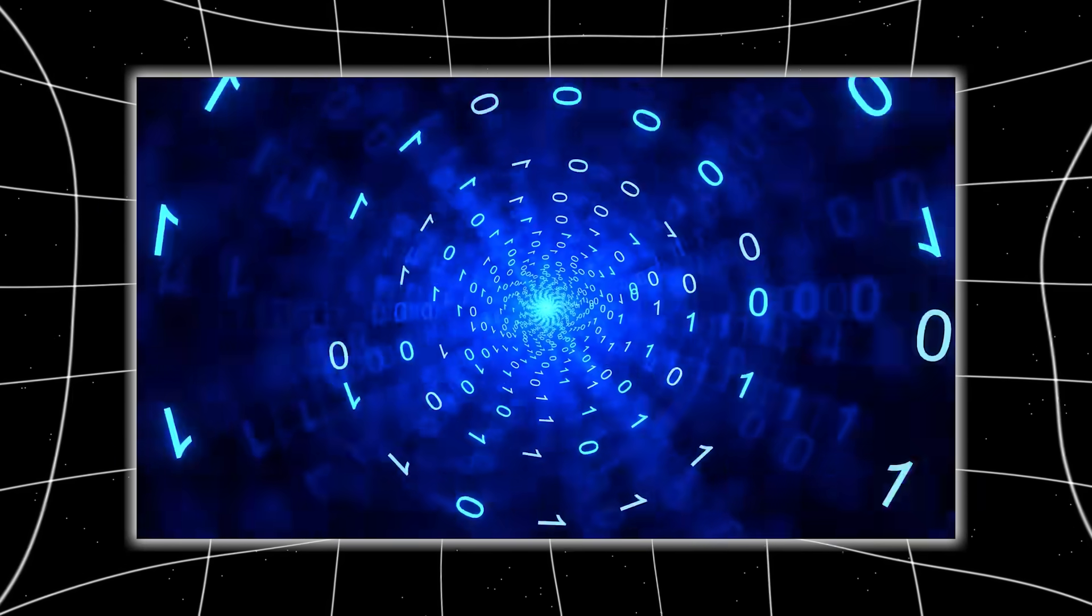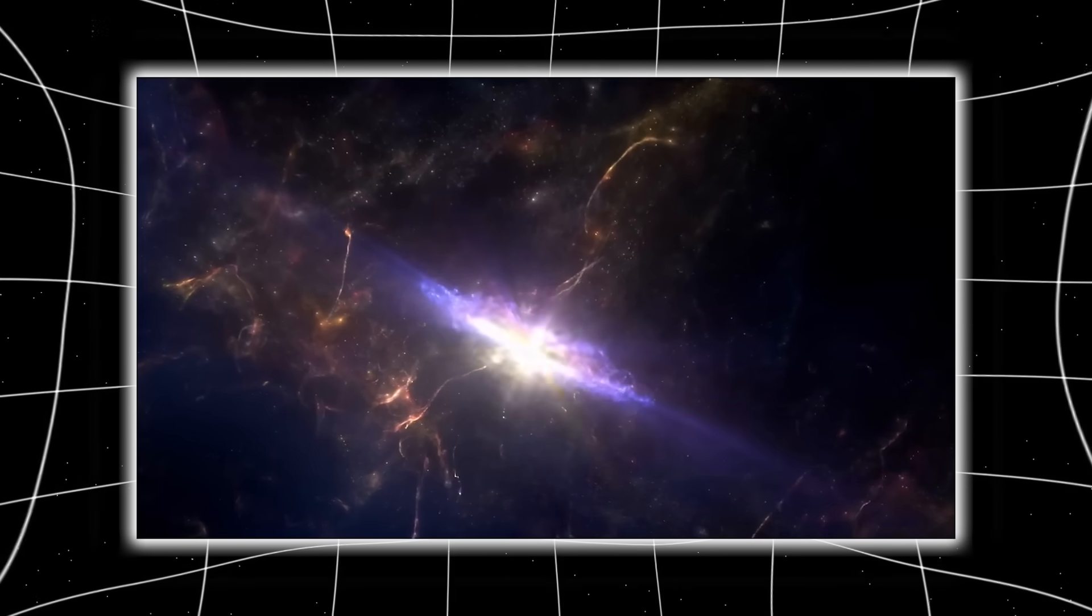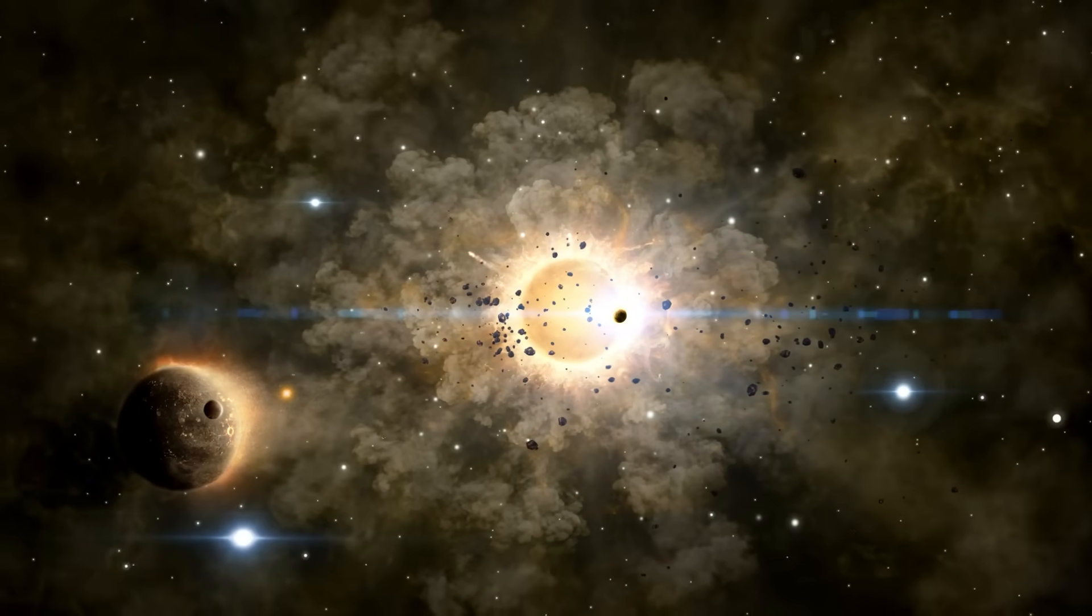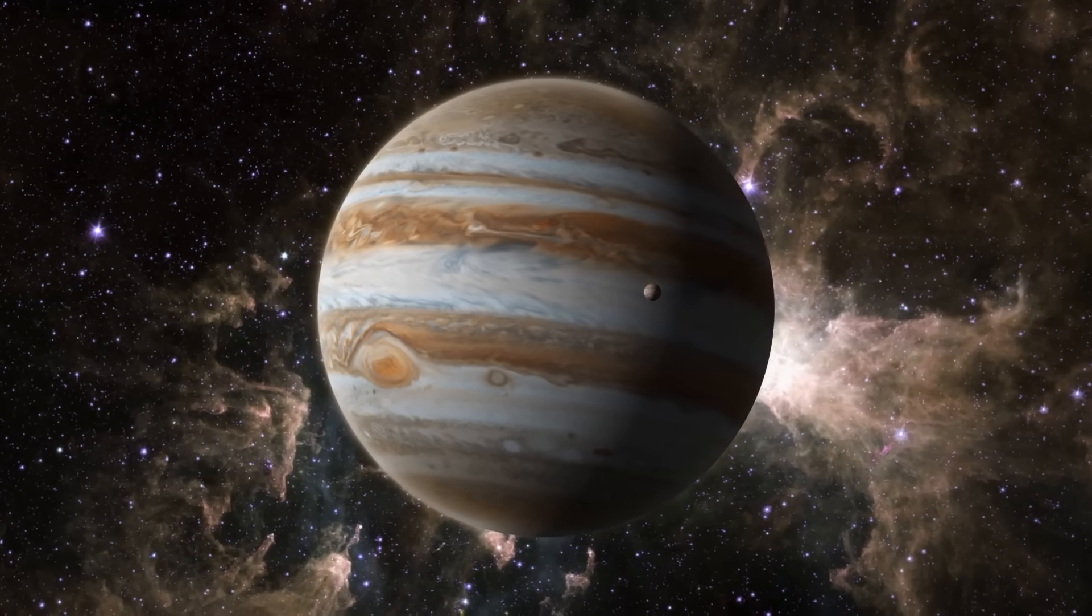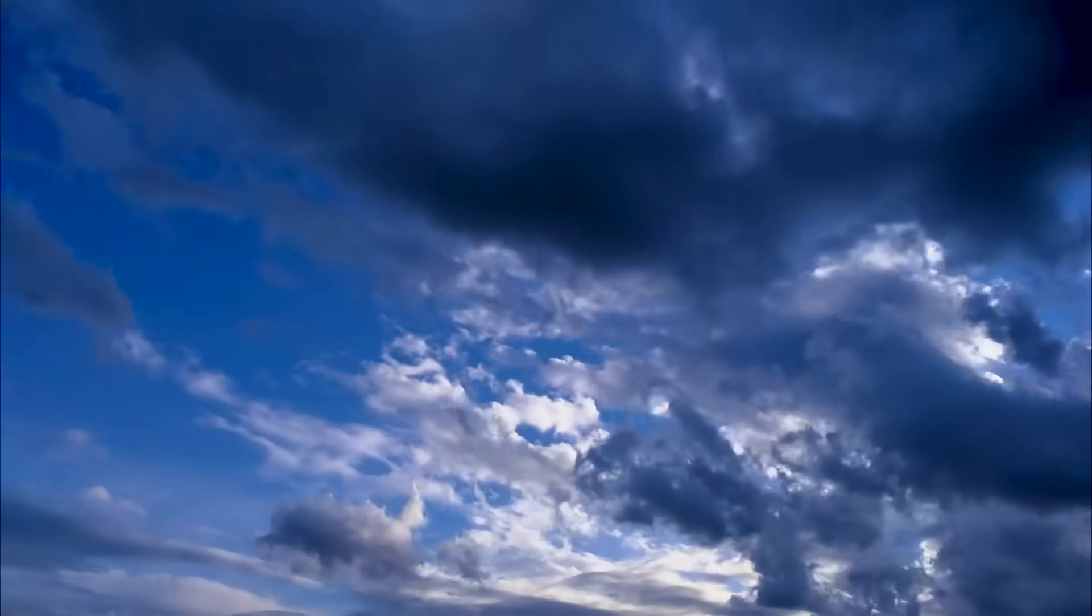A structured transmission embedded inside the network itself, synchronized with 3I Atlas's pulse sequence. And when decoded, it formed coordinates, but not for space, for time. The location matched the orbit of Jupiter, but the timestamp didn't. It pointed forward, exactly six years into the future.